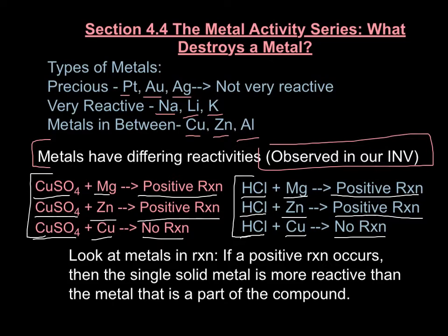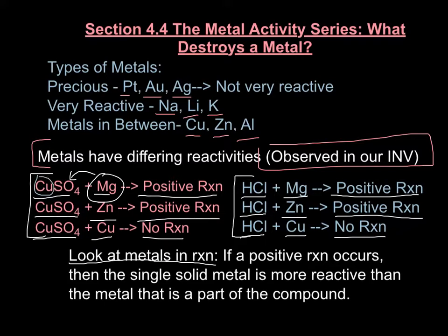We can predict whether these reactions are going to take place before we even put magnesium in the test tube with copper(II) sulfate — we could predict whether this reaction would happen or not. We do that by first looking at the metals involved. In this case, I'm talking about the copper and the magnesium. If a positive reaction occurs, then the single solid metal is more reactive than the metal that is part of the compound — meaning magnesium, which is the single solid metal, is more reactive than the copper, which is part of the copper sulfate compound.